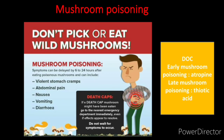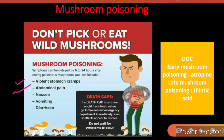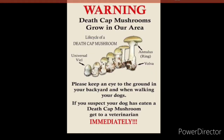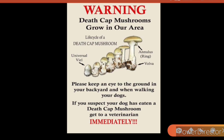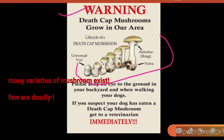Mushroom poisoning is more common in Western countries. It causes violent stomach cramps, abdominal pain, nausea, vomiting, and diarrhea. In early mushroom poisoning, the drug of choice is atropine; in late mushroom poisoning, thioctic acid is the drug of choice. In areas where toxic mushroom species are found, governments post warning signs. These mushrooms are known as death cap mushrooms.